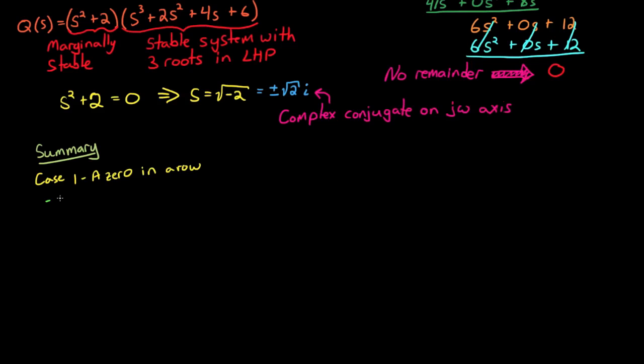Then we completed the table using epsilon in replace of zero, then we took the limit as epsilon went to zero, and then we counted the number of right half-plane roots.